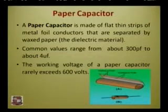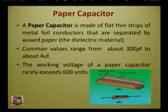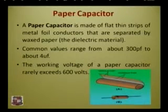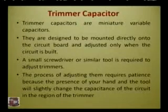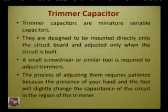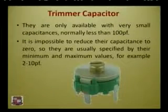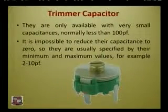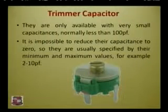The paper capacitor is made of flat thin strips of metal foil conductors separated by wax paper as the dielectric material. Common values range from about 300 picofarad to about 4 microfarad. Next is the trimmer capacitor — a miniature variable capacitor designed to be mounted directly on the circuit board and adjusted only when the circuit is built. A small screwdriver is needed to adjust it. They are only available with very small capacitances, normally less than 100 picofarad, and are specified by their minimum and maximum values, for example 2 to 10 picofarad.